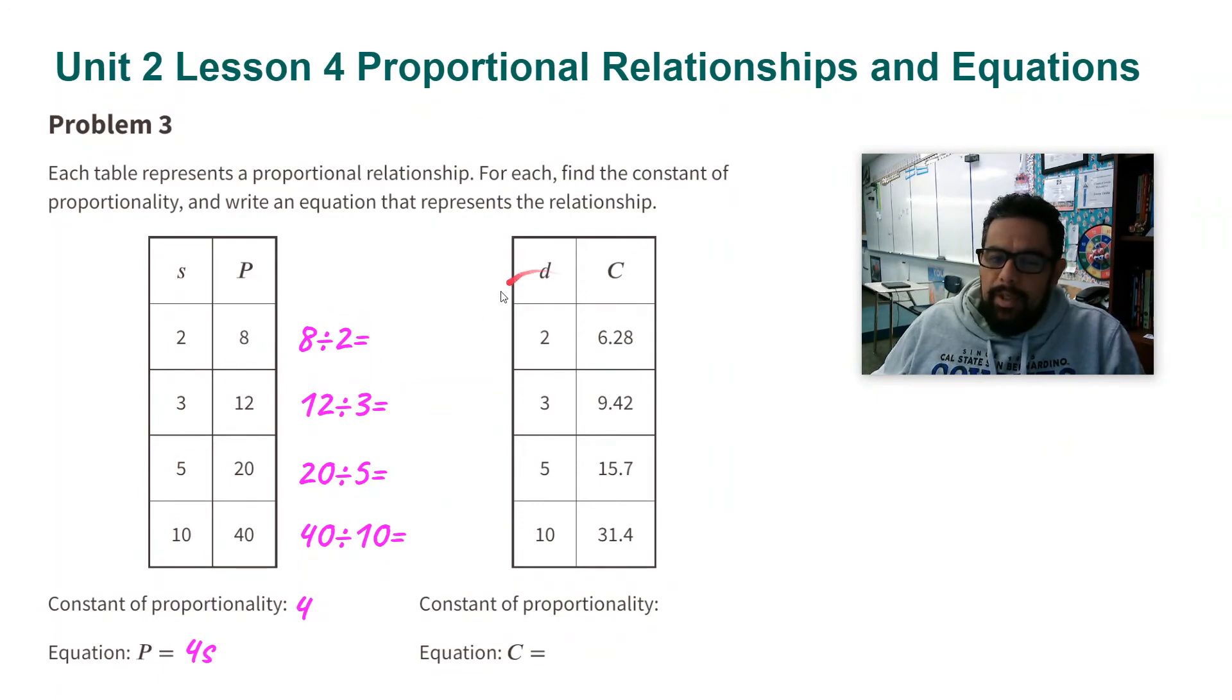Now for the next table here, I'm doing the same thing. 6.28 divided by two. I'm going to 9.42 divided by three. I'm dividing C, dividing by this little d here. And if you were to divide all these out, you will get the same number. That number is 3.14.